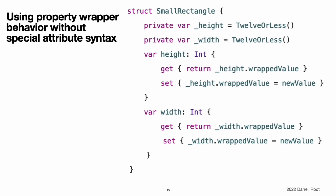When you apply a wrapper to a property, the compiler synthesizes code that provides storage for the wrapper and code that provides access to the property through the wrapper. The property wrapper is responsible for storing the wrapped value, so there is no synthesized code for that. You could write code that uses the behavior of a property wrapper without taking advantage of the special attribute syntax. For example, here is a version of SmallRectangle that wraps its properties in the TwelveOrLess structure explicitly. The _height and _width properties store an instance of the property wrapper TwelveOrLess. The getter and setter for height and width wrap access to the wrappedValue property.